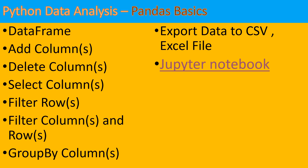In Pandas basics, you will learn about DataFrames. A DataFrame is the primary Pandas data structure that helps us analyze two-dimensional data like tabular data. The data could come from a CSV file, Excel file, JSON file, or a simple two-dimensional Python array. Once we have the data, we can add or delete columns, select columns of interest, and filter rows based on conditions.